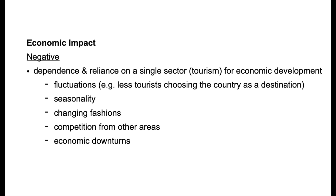Changing fashions — we talked about the rise of new types of tourism before. With the rise of new types of tourism, maybe the older types become less fashionable or less appealing, so nobody goes. Competition from other areas, relatively speaking, would be substitution. If you want to go to a coastal beach resort to sunbathe, you can choose from resort A or resort B, or even country A or country B — for example, you can go to Thailand or Malaysia. When one place is fashionable, a lot of tourists go there, but when it becomes less fashionable, it gets fewer tourists.